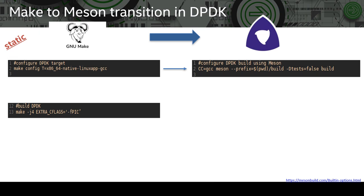You can notice there is a prefix option used which tells Ninja where to install the libraries and drivers built. If this option is not used, Ninja will perform a system-wide installation in /usr/local in case of Linux and in the C drive in case of Windows after building them. Meson documentation suggests we always override this prefix value. There are many such built-in options for Meson which you can check out in the link below. And then there are project-specific options like disabling tests.